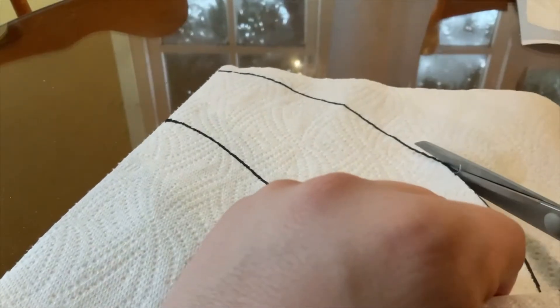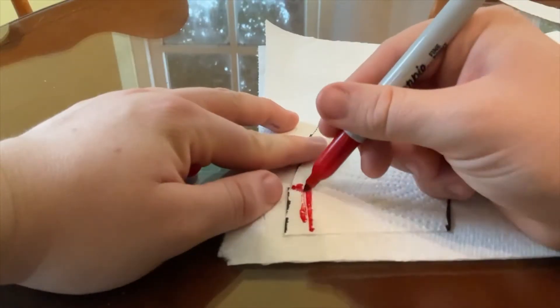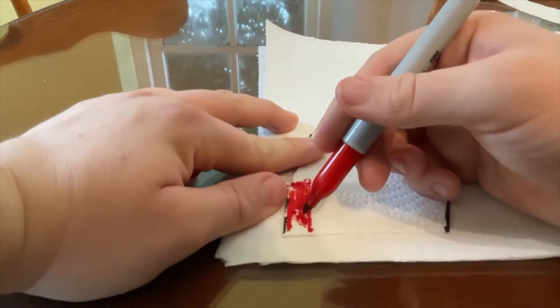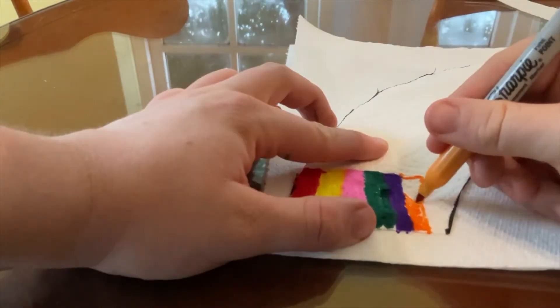Start by cutting some kitchen roll into the shape of a rainbow. Using some coloured felt tip pens, colour two centimetres from the bottom with each colour of the rainbow.